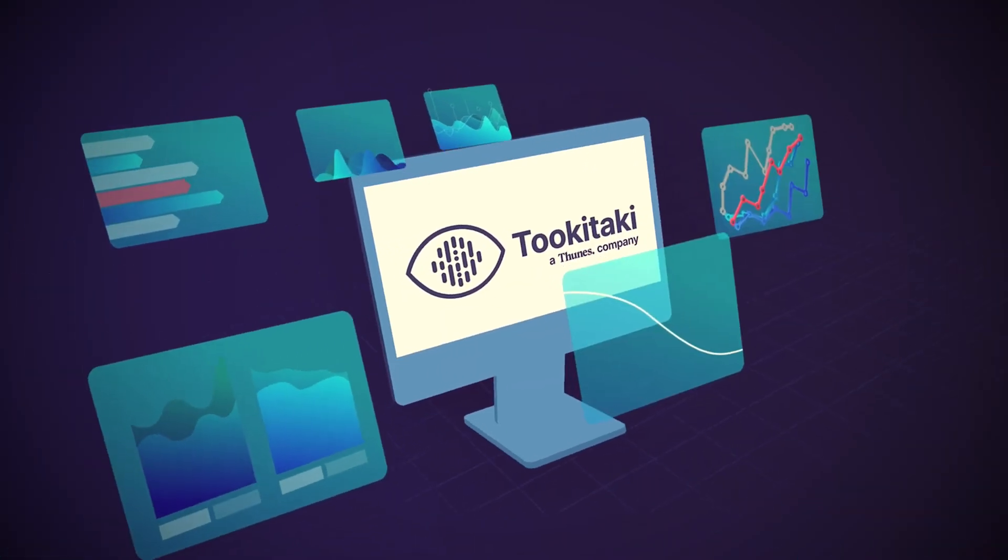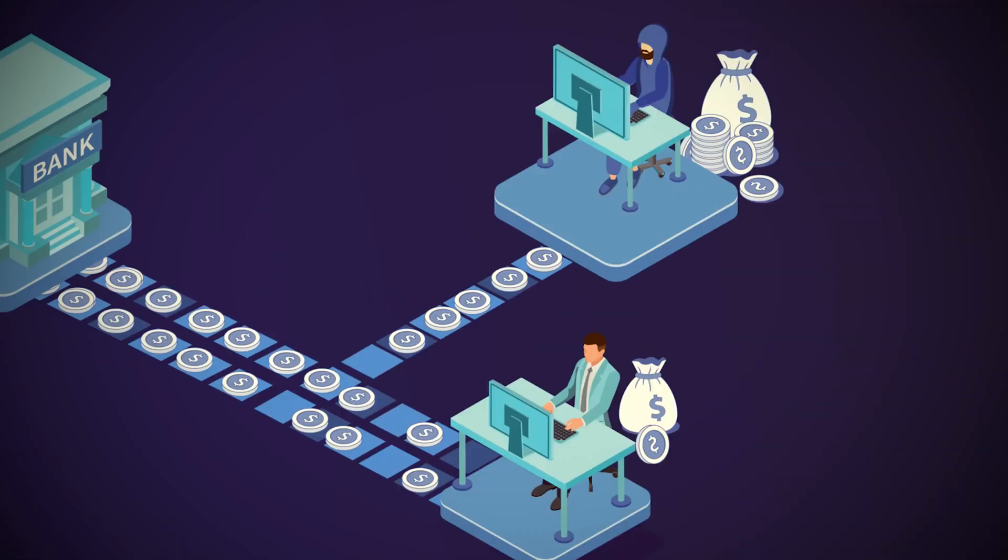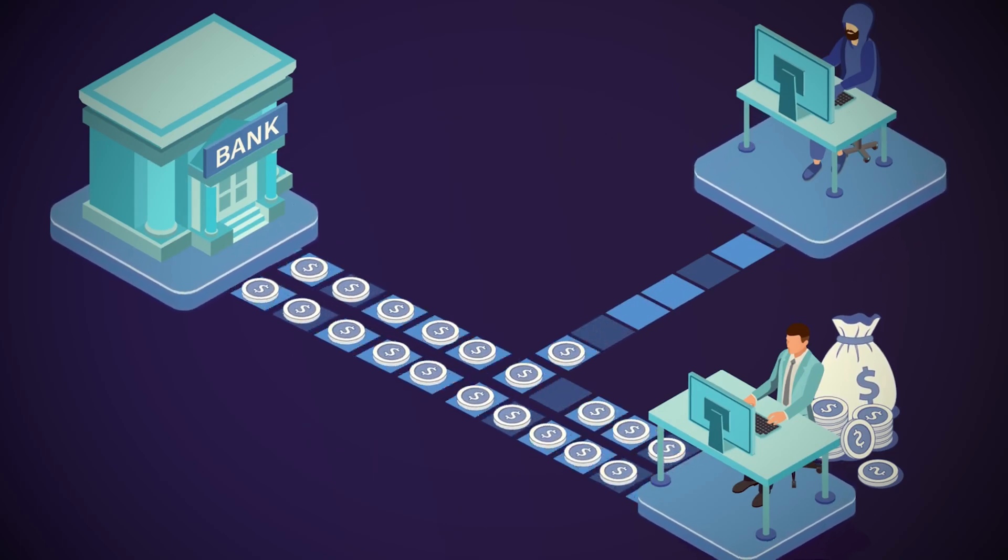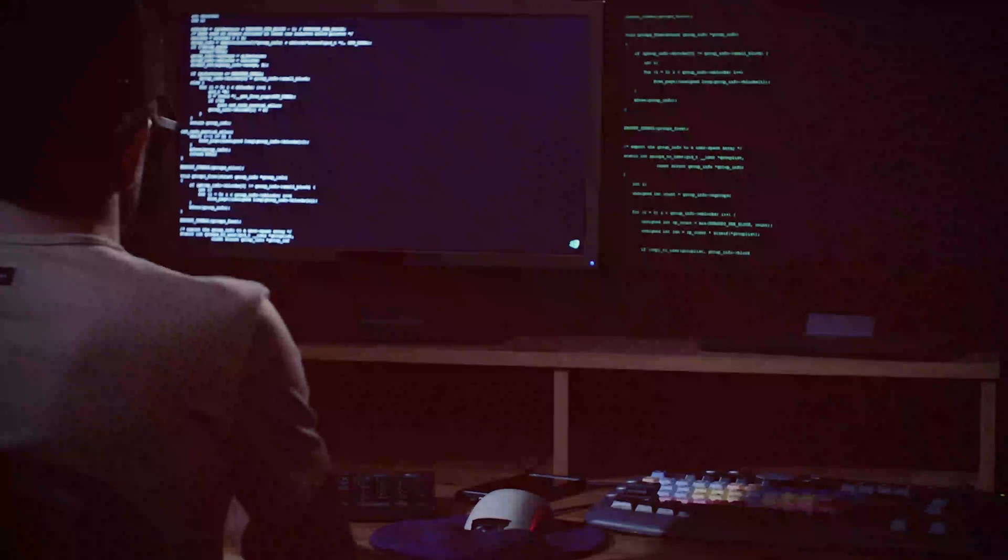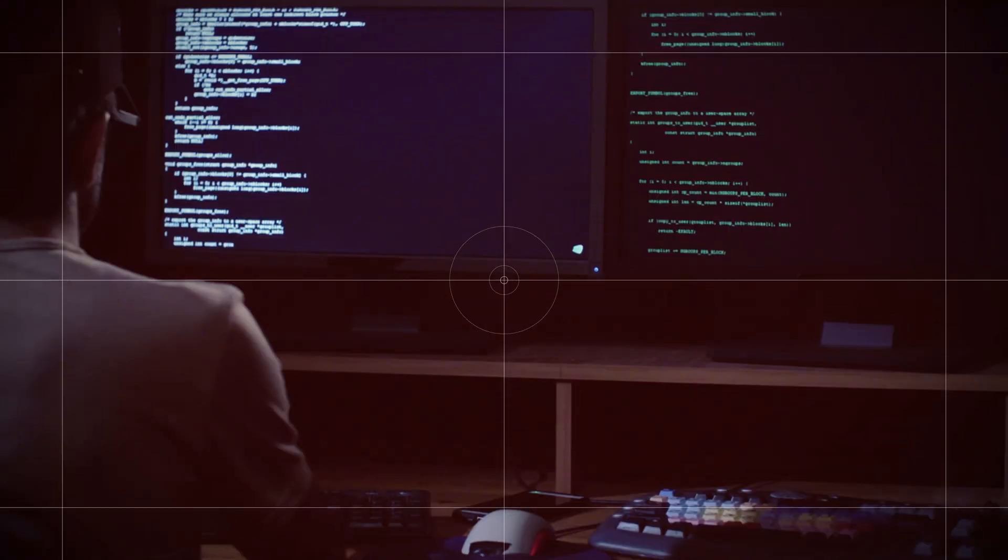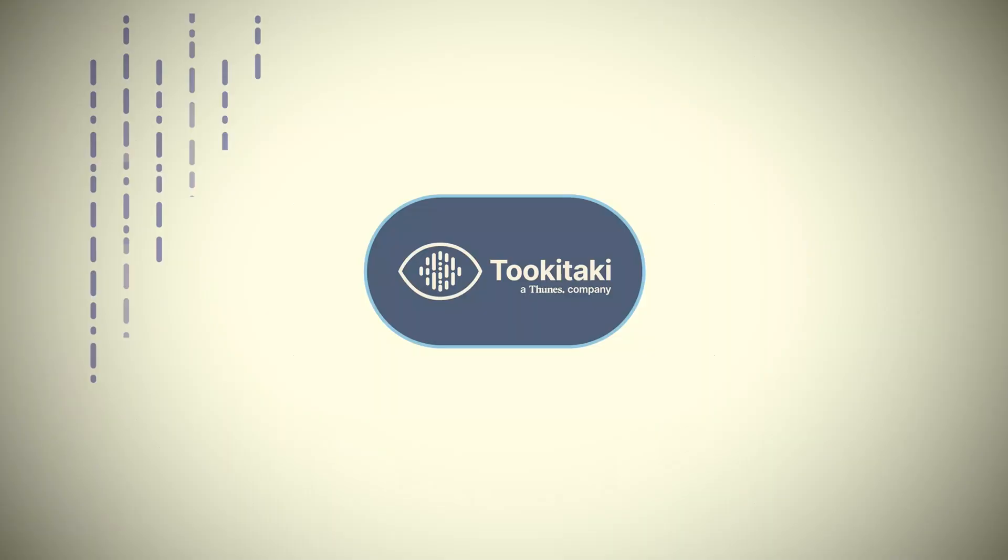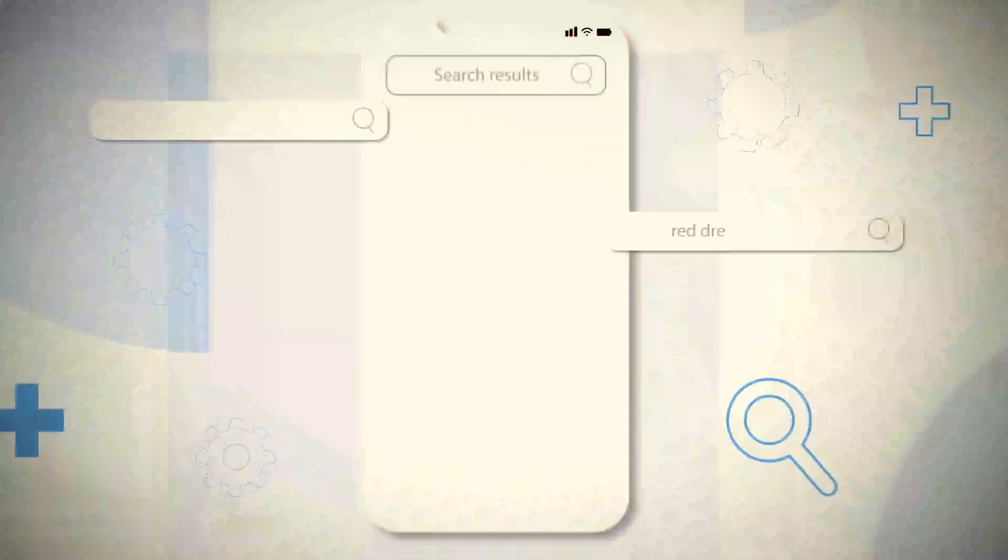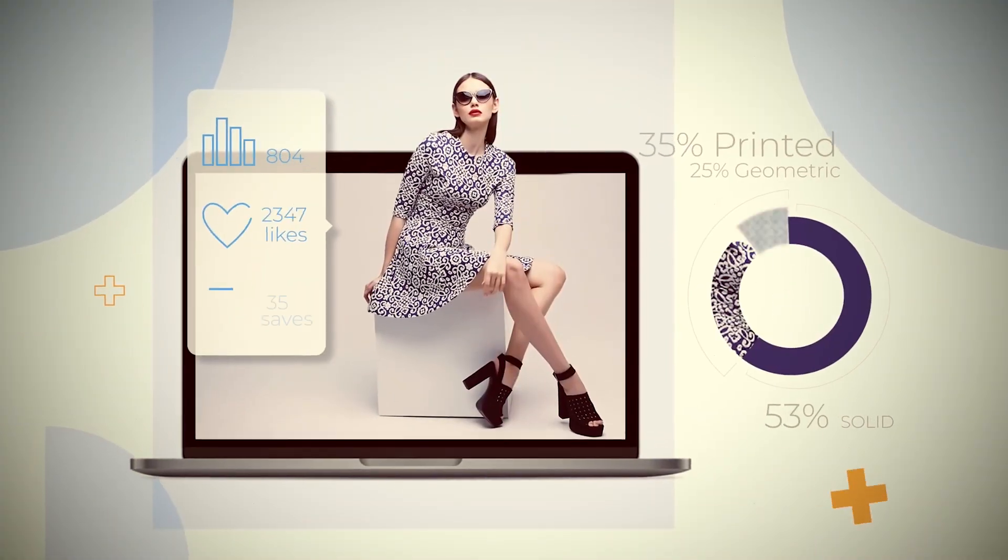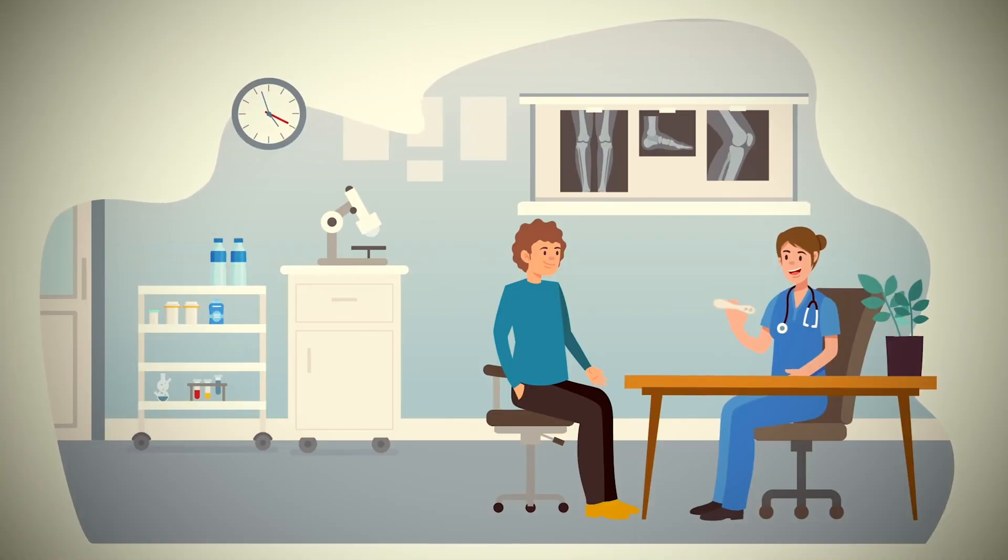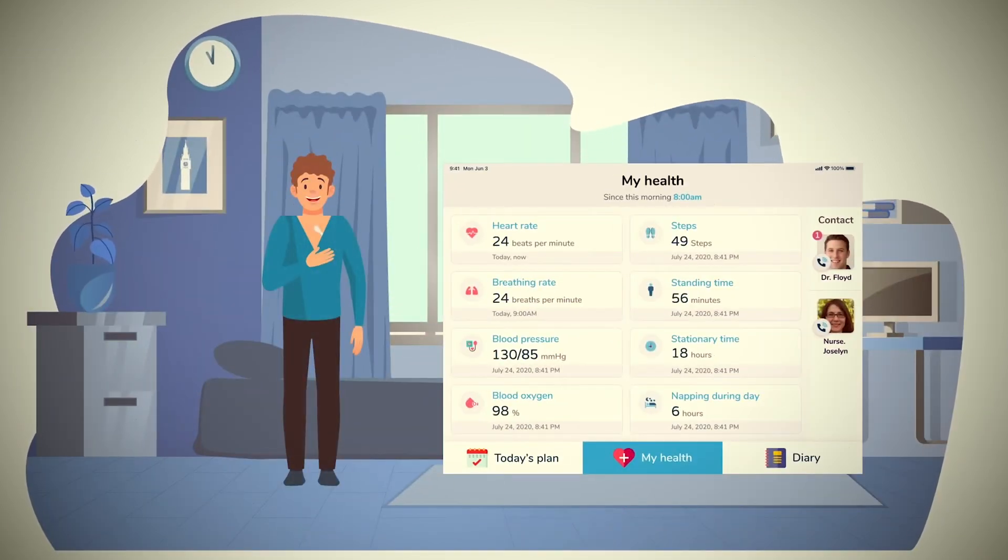And in the world of high finance, there's Tukitaki. This company built a powerful AI platform to help banks fight one of their biggest problems, money laundering. Its software can spot suspicious patterns in millions of transactions that a human would miss, helping to keep the global financial system secure. These companies are more than just success stories. They're the tangible proof of a system working in perfect harmony. They show what's possible when visionary planning, massive investment, top-tier talent, and world-class infrastructure all come together in one place.